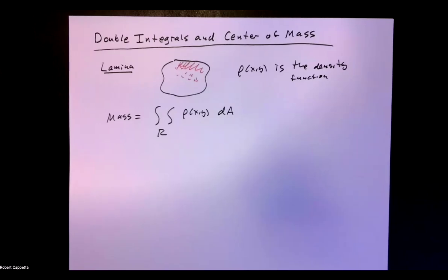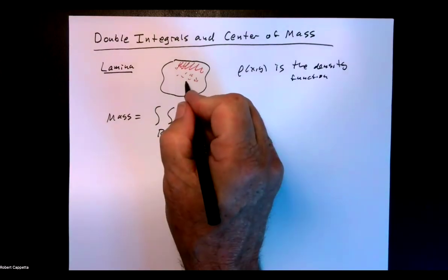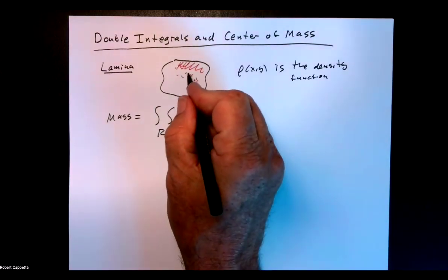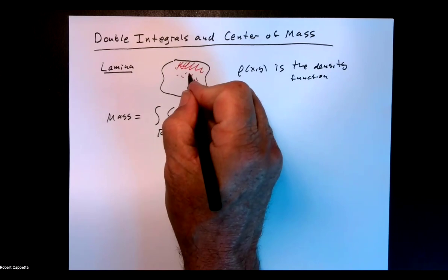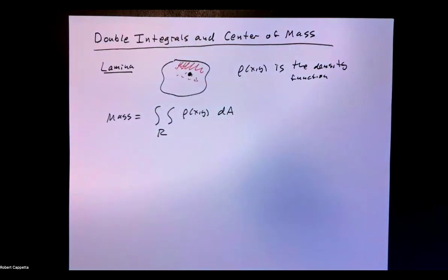Our goal is to discuss the center of mass — in other words, where can we balance this? This seems to be heavier on one end, so maybe about here. If I put a little fulcrum underneath that, maybe that thing would balance on that point. That's what we're thinking about.